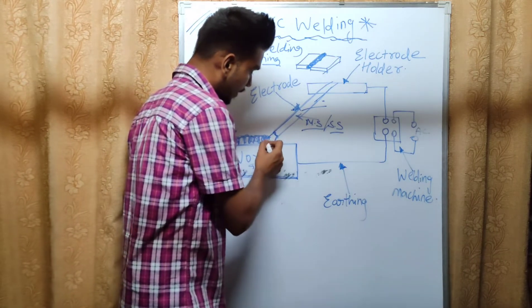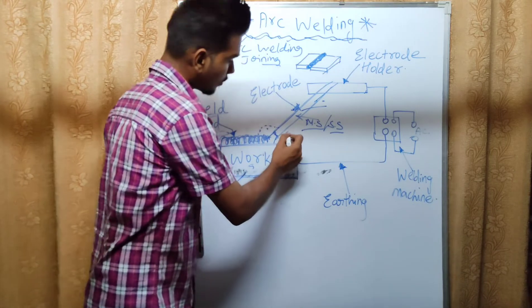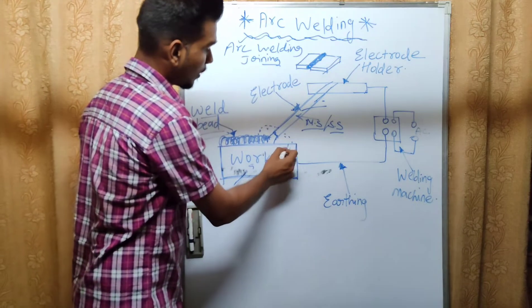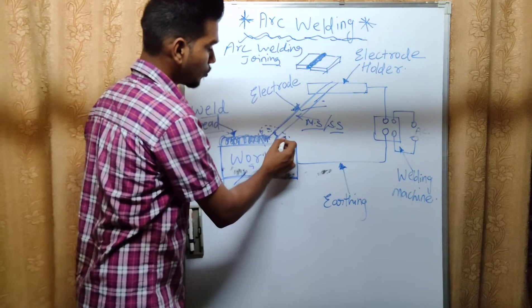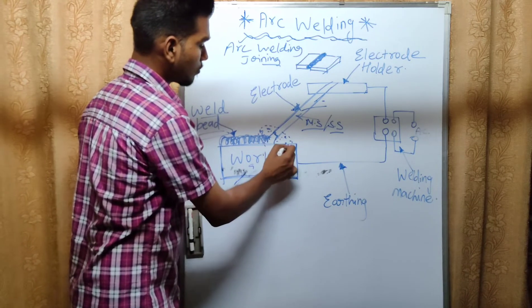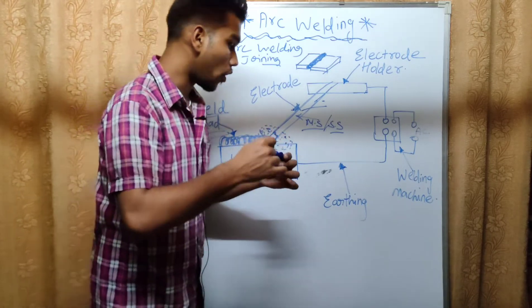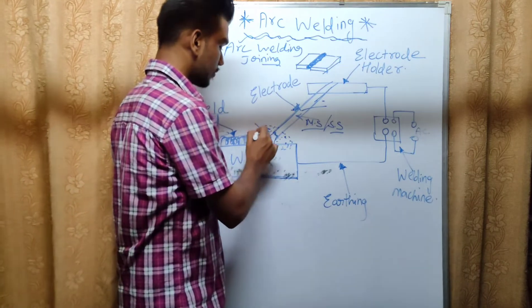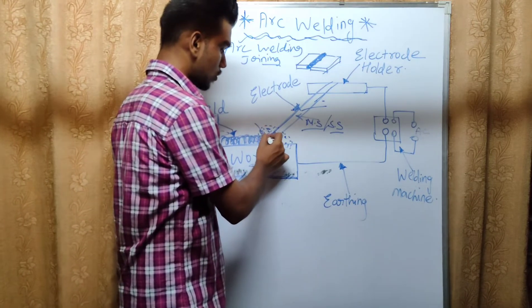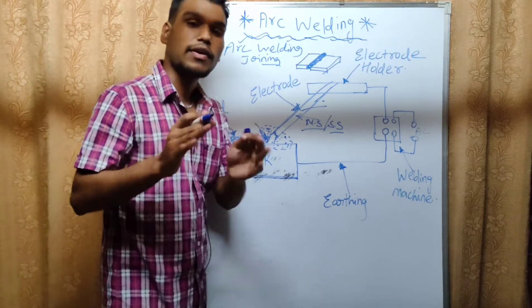What does flux do during welding? The flux creates a film that prevents oxygen from coming in. If oxygen comes in, it causes different types of defects.